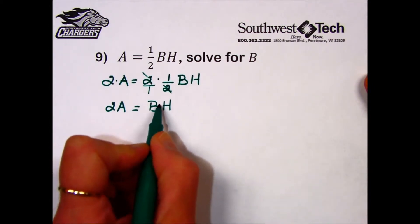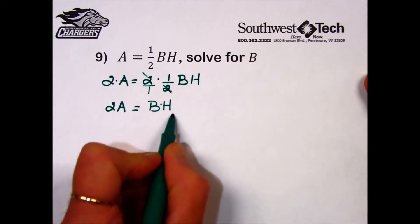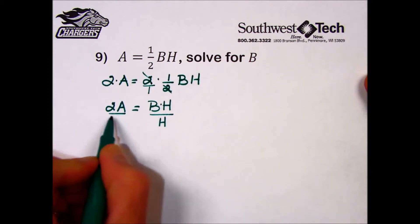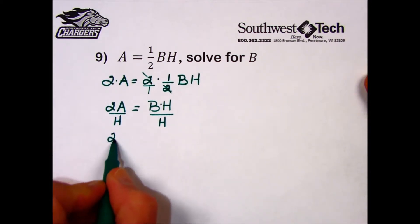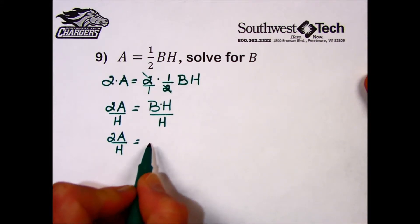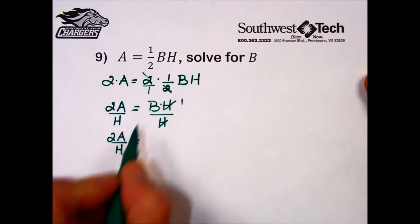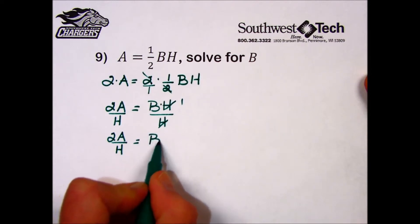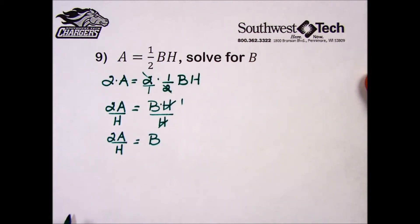The last step to get B by itself then is to divide both sides by H. On the left-hand side, unless we know values of the variables, we can't simplify it any further. We'll leave it alone. H over H cancels out, leaving a 1, and 1 times B is B. We've solved for B.